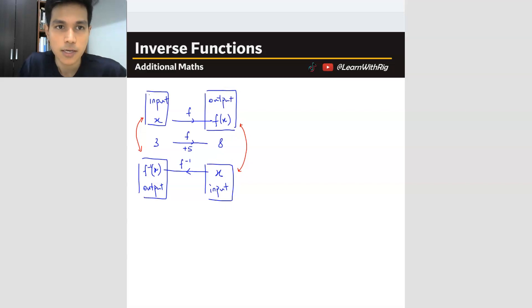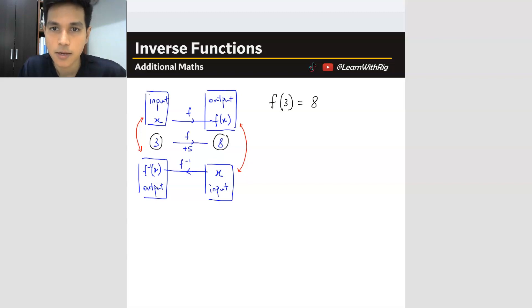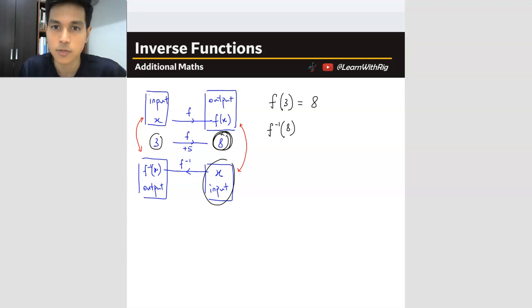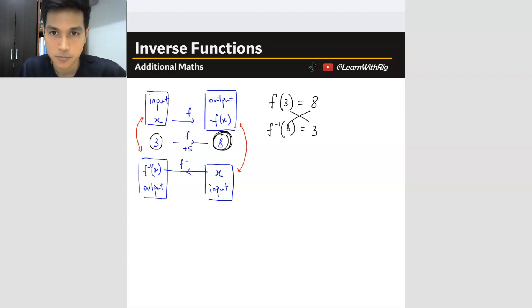So I want you to see the relationship. These two are basically the same thing — it's just that one is forward function and one is inverse function, so the input and output are swapped. This will be the output for the forward function but the input for the inverse function. So in other words, if I write in terms of a function: forward function with input 3 gives output 8. But for the inverse, the inverse of 8 gives you 3 — it's actually opposite to each other. The input for forward becomes the output for the inverse.